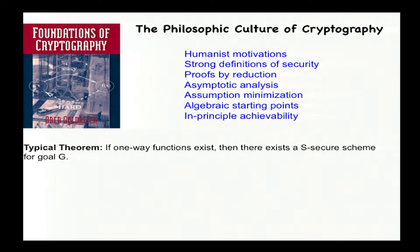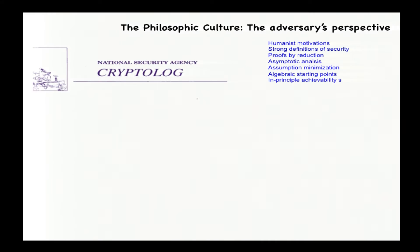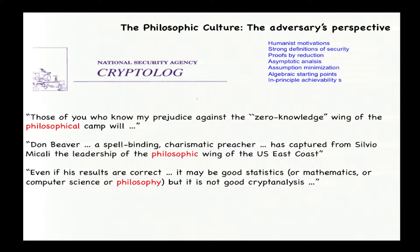A typical theorem would look like saying that if one-way functions exist, then you can prove the existence of a way to solve some security problem. Using the term philosophic for this culture is somewhat novel. Ironically, the only precedent I could find for the use of that term for these types of viewpoints was from the adversary. CryptoLog was an NSA internal newsletter which was declassified due to a Freedom of Information Act request. And one of the articles is an anonymous NSA writer who gives a synopsis of Eurocrypt 92.